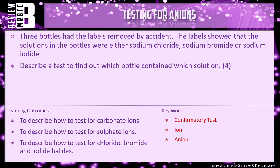And that is everything there is to this video. I have got a review question for you: three bottles had their labels removed by accident. The labels showed that the solutions in the bottles were either sodium chloride, sodium bromide or sodium iodide. Describe a test to find out which bottle is which. What do you need to add first — which acid? Then what do you add? Silver nitrate — and what are you going to see if you have a chloride, a bromide, or an iodide?